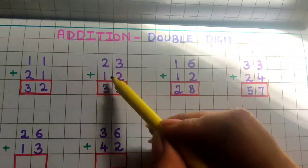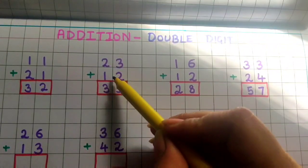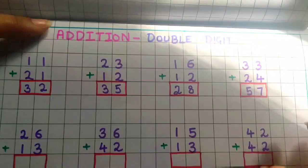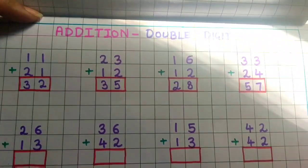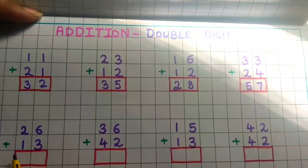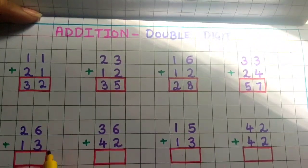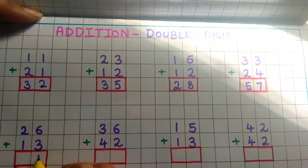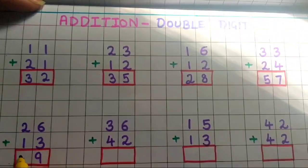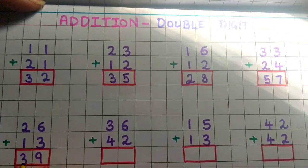Ok children, now the next one: 26 plus 13. 6 plus 3 is 9, so I will write here 9. 2 plus 1 is 3. So the answer is 39.